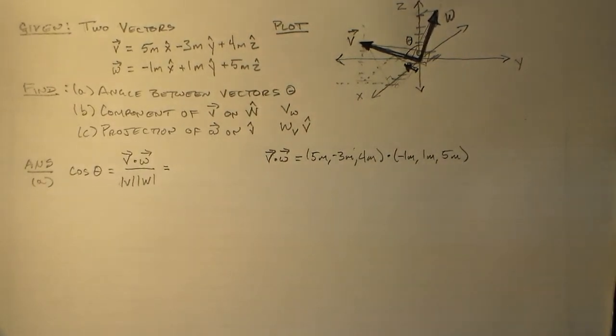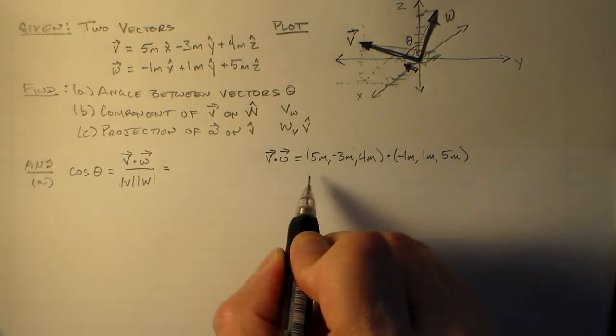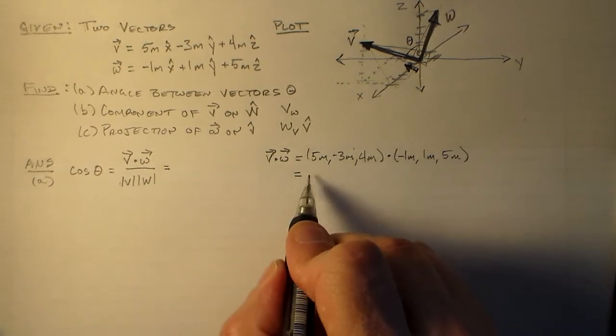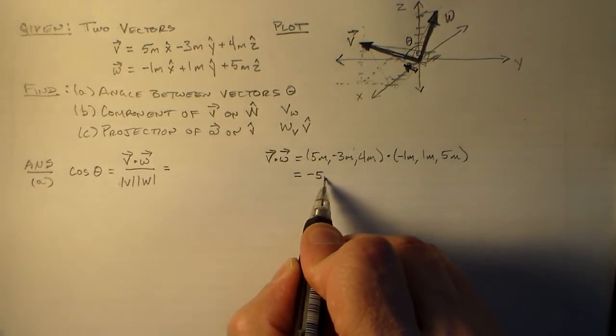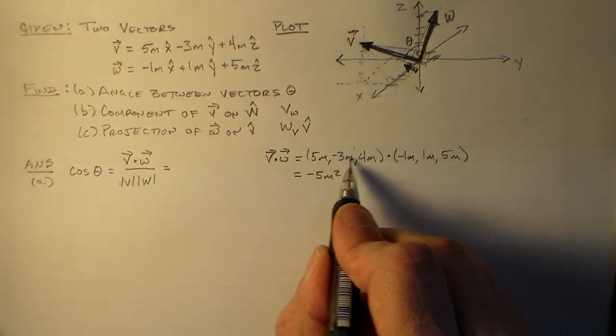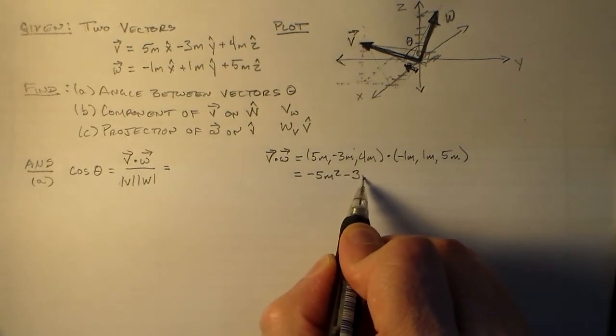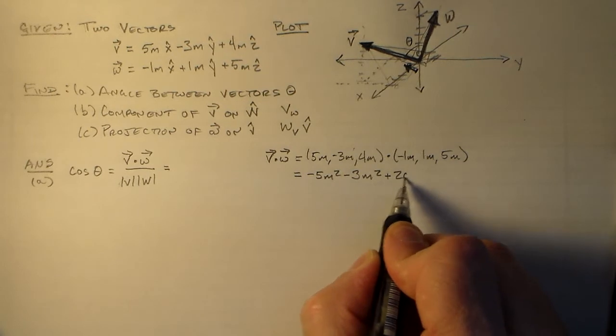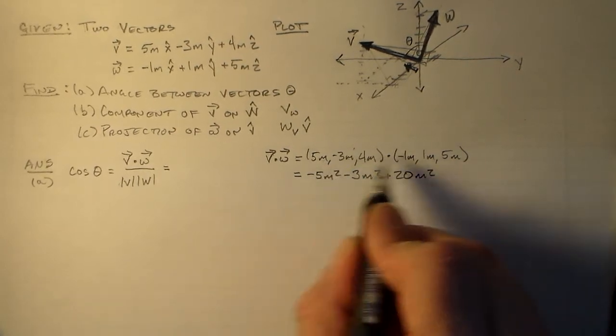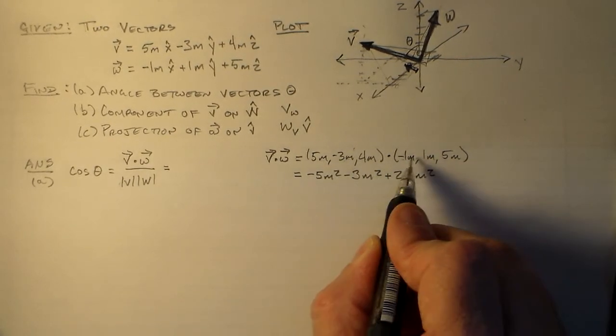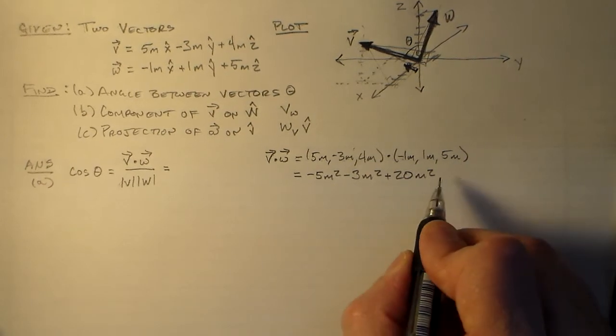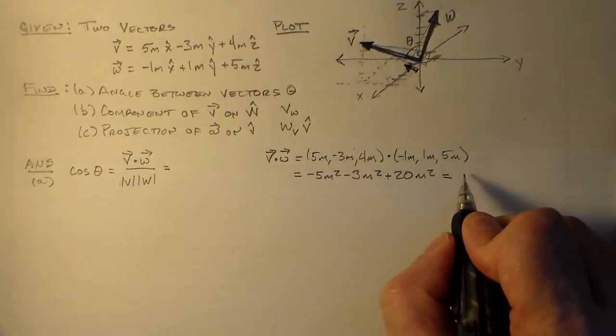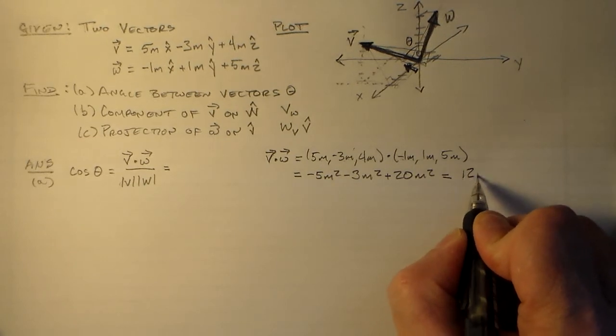And we get to do that whole dot product thing that I'm sure by now you love, which is in this case 5 times negative 1, which is minus 5 square meters, minus 3 times 1, which is minus 3 square meters, 4 times 5, which is 20 square meters, multiply and add, multiply and add, multiply and add. And then you do all that wonderful stuff. You add that all up, you end up with 12 square meters, okay?